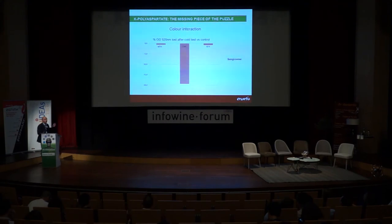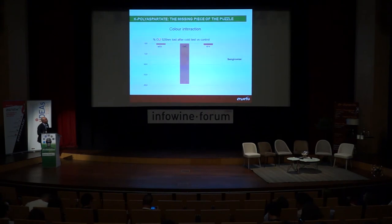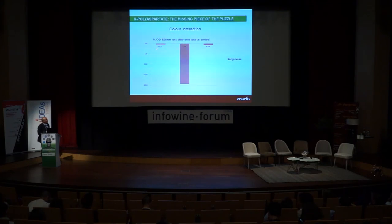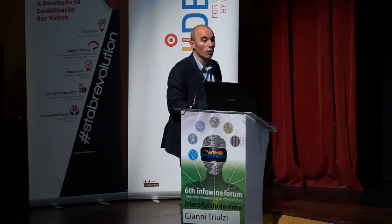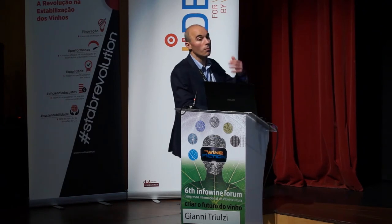We were touching the point of interaction with color. This is the way to estimate color loss, checking the optical density at 520 nm, comparing three samples — the same wine, a Sangiovese, treated with metatartaric, carboxymethylcellulose, and potassium polyaspartate. CMC alone caused color loss. Potassium polyaspartate did not — in fact, in some cases it reacts with color even less than metatartaric. This is one more point of strength. This is a very lucky compound in winemaking.